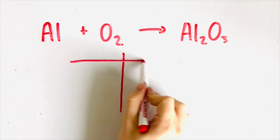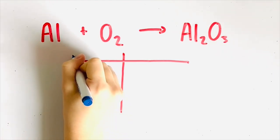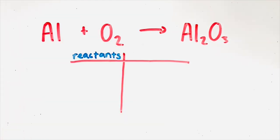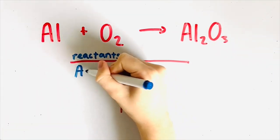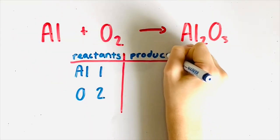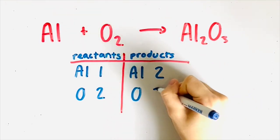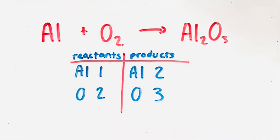In this method, you would use a table to list out the amount of elements you find on each side. On the left side of the table, which is the reactant side, you have one aluminum atom and two oxygen atoms — you know this because of their subscripts. On the right side, which is the product side, you have two aluminum atoms and three oxygen atoms. Once you list them out, you need to manipulate the numbers so that they are the same on both sides of the equation.